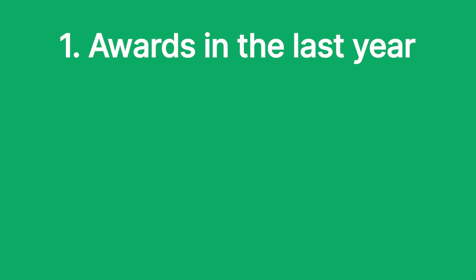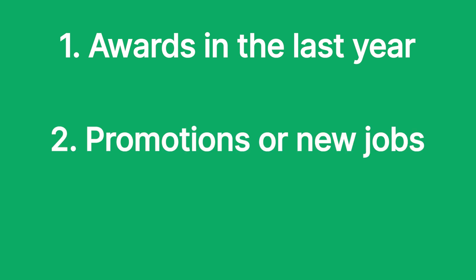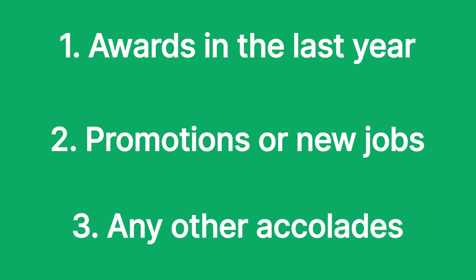Step 1: Check if the profile has any awards in the last year. If yes, complete the sentence with context on the award. Step 2: If there are no awards, check if the profile has any promotions or new jobs in the last year. If yes, complete the sentence with context on the job change or promotion. Step 3: If there are no awards or job changes, check the profile for any other accolades — you could use job anniversaries, certifications, skills, volunteer experience, or anything else you deem relevant to craft a personalized subject line. That's good enough for instructions.